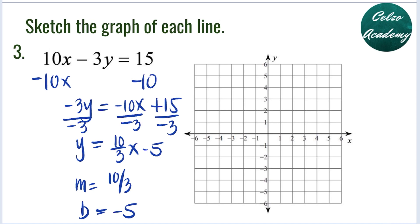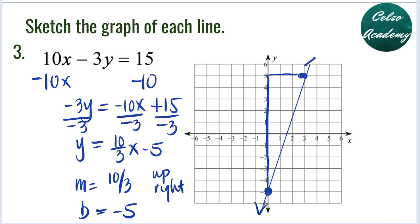To graph this line, we begin with the Y-intercept negative 5. From that point, we graph the slope 10 over 3, which means 10 up and 3 to the right. From negative 5, we go 10 up and 3 units right, then connect the points to draw the line. This is the graph of 10X minus 3Y equals 15, or Y equals 10 thirds X minus 5.